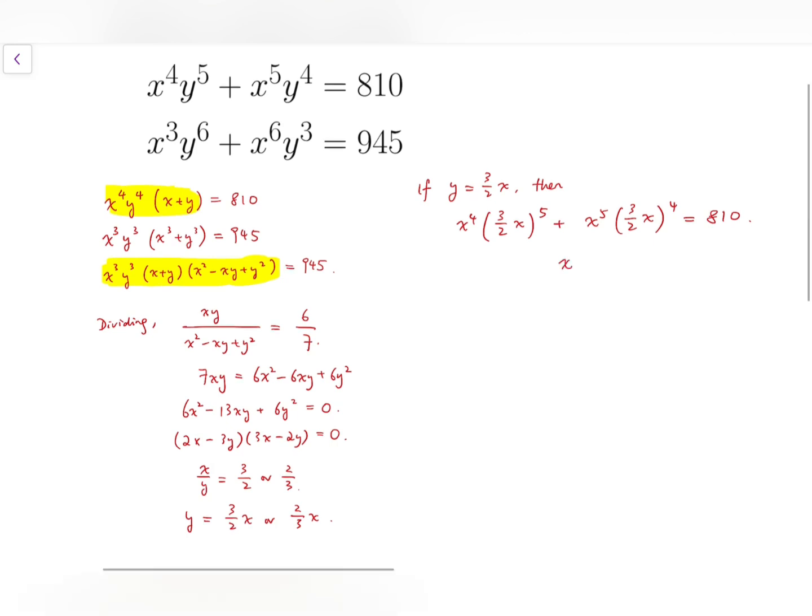So x to the power 9 times 243 over 32 plus 81 over 16 equals 810. Now we can simplify the fractions to get x to the power 9 times 405 over 32 equals 810. So x to the power 9 equals 64. Notice that 64 is actually 2 to the power 6, and so removing the powers, we can get x equals 2 to the power 2 thirds.